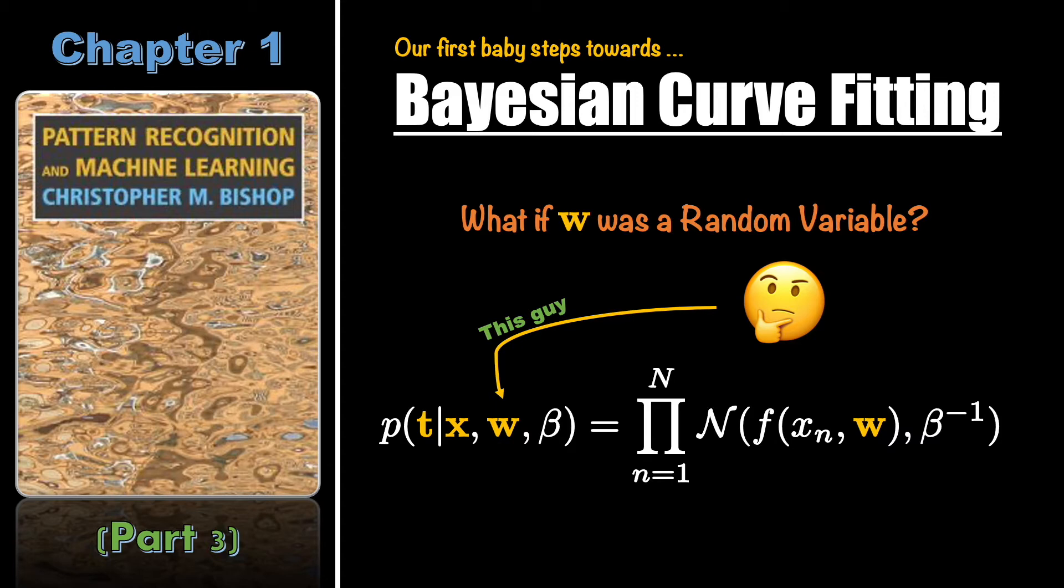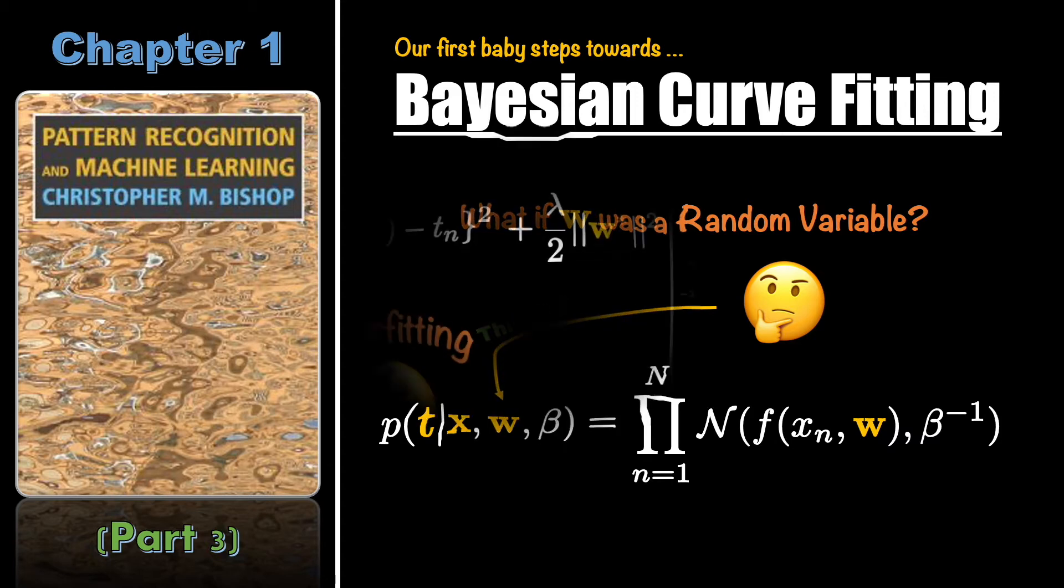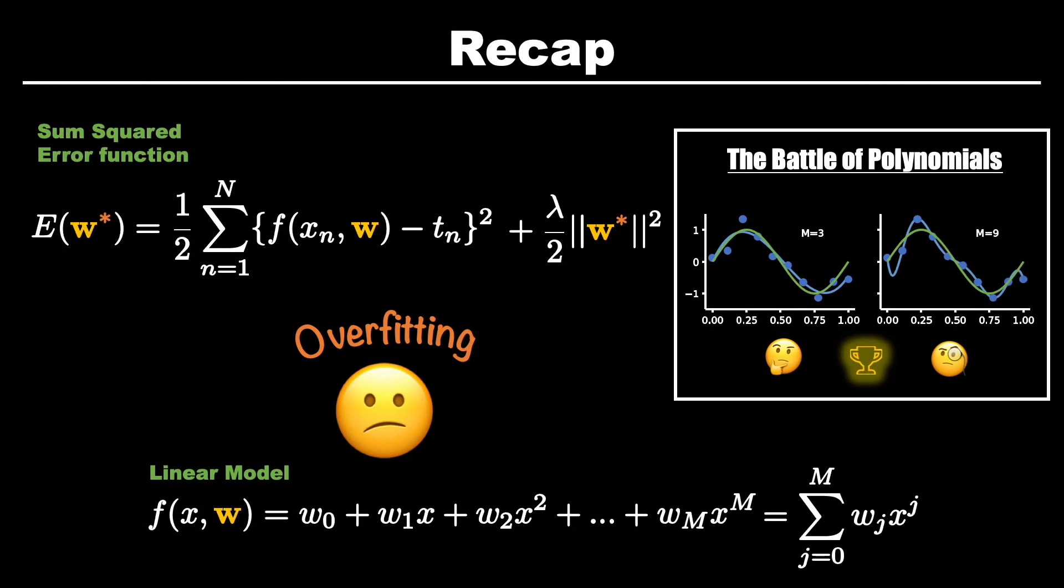But before that, here is a quick recap. In part one, we went through the process of building a linear model using polynomials of various degrees. We learned about sum of squared error function and saw the solution to get the weight vector. We also noticed that a more capable polynomial of higher degree overfitted. We then discussed two remedies: the first one was to use a bigger data set and the other was to do regularization.